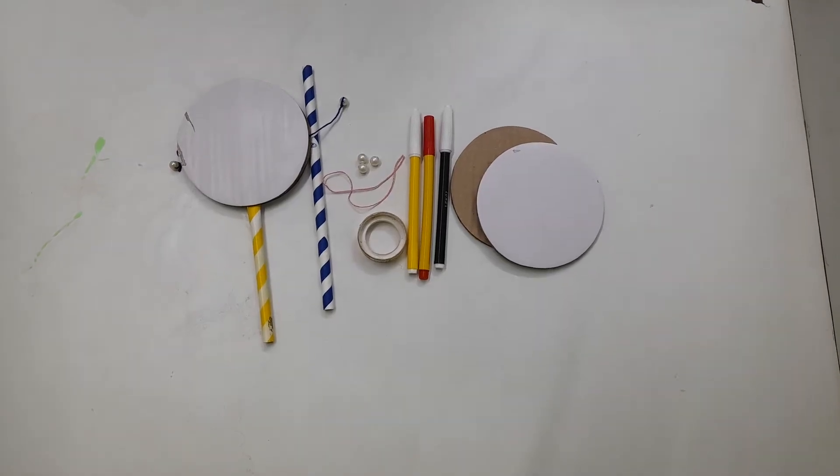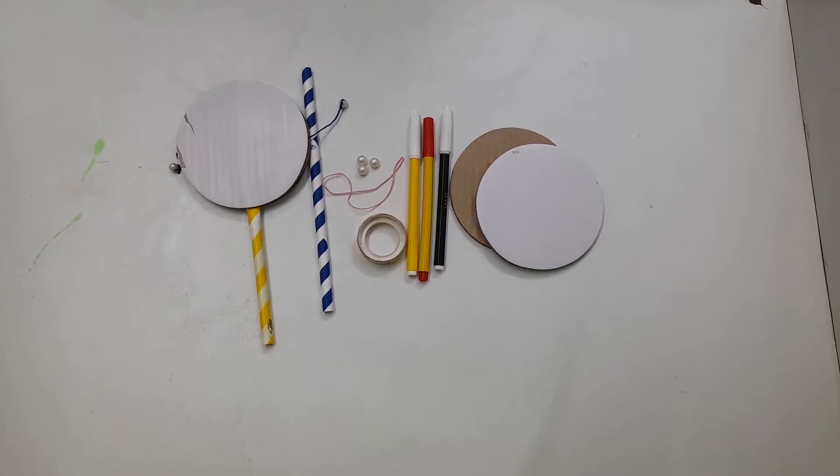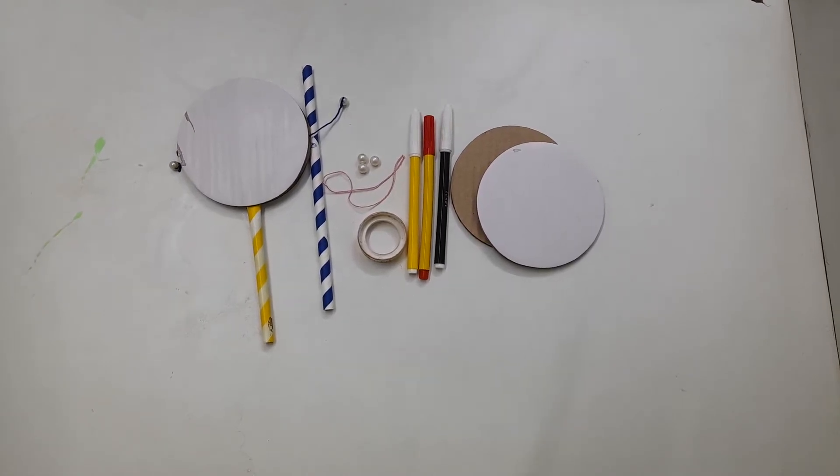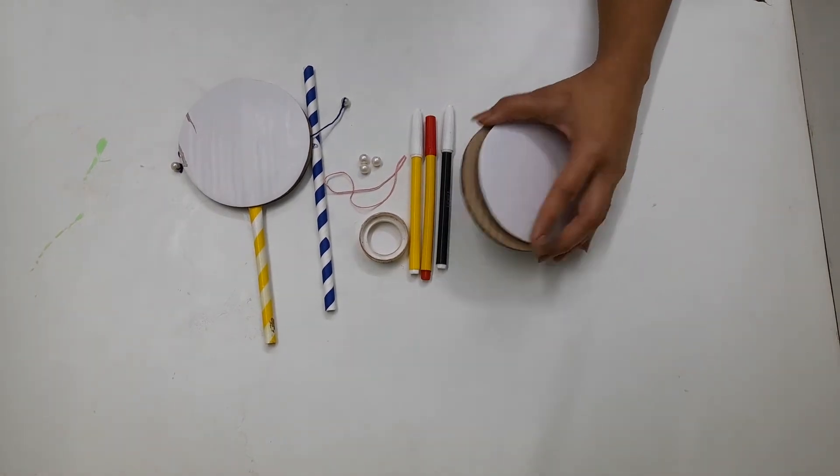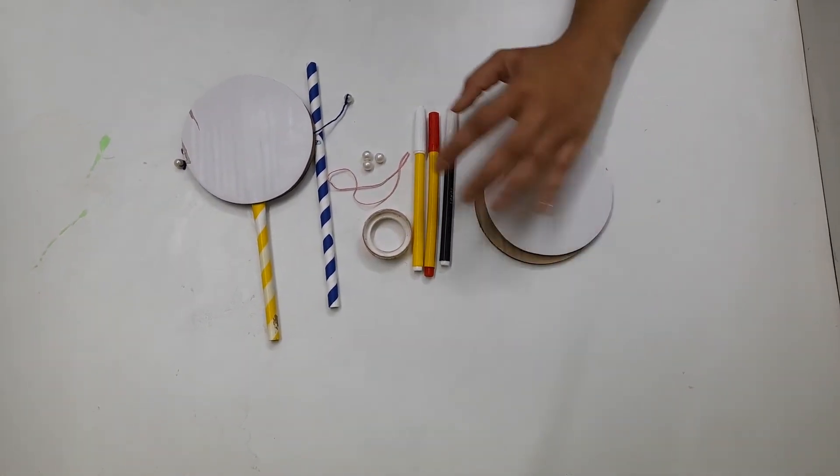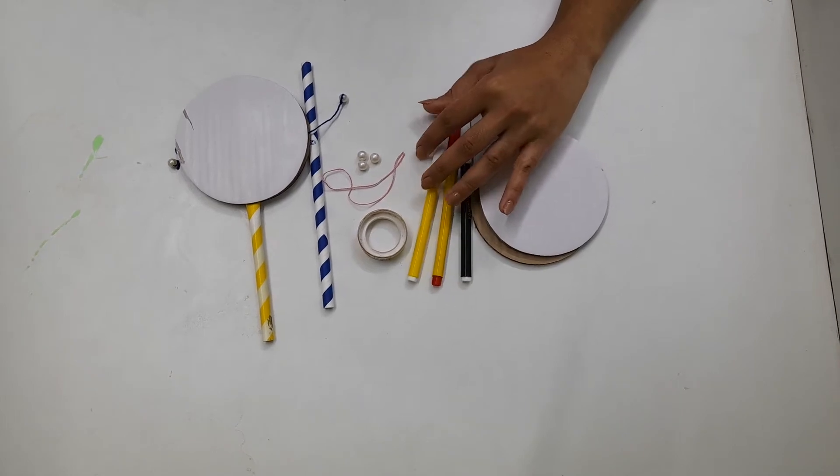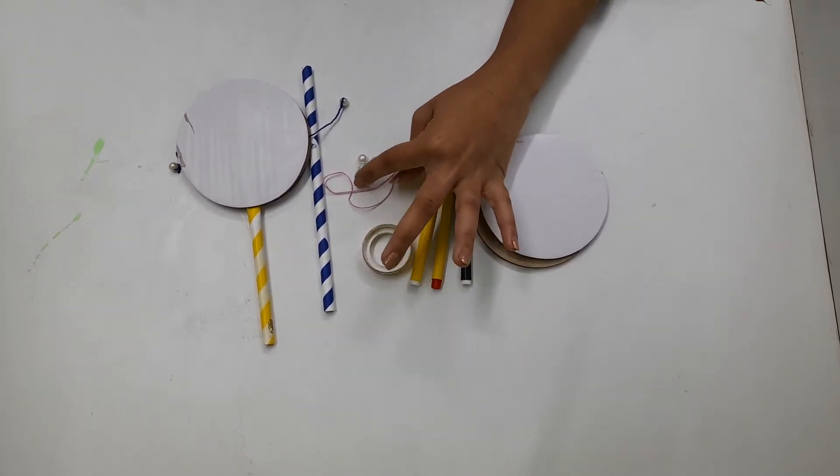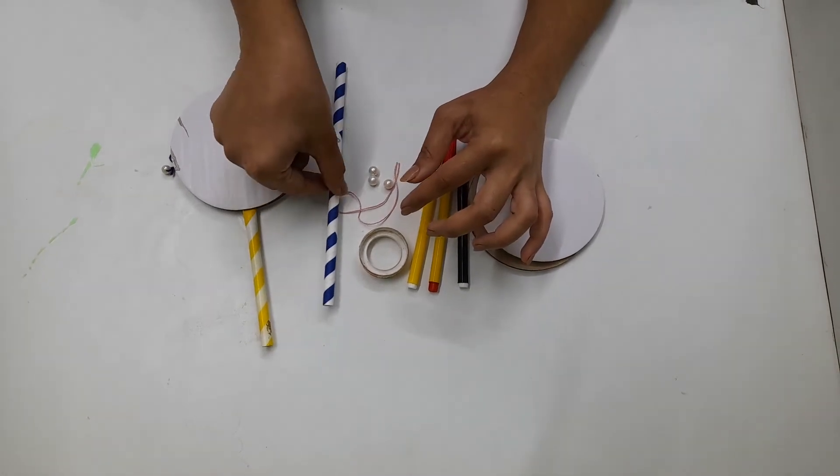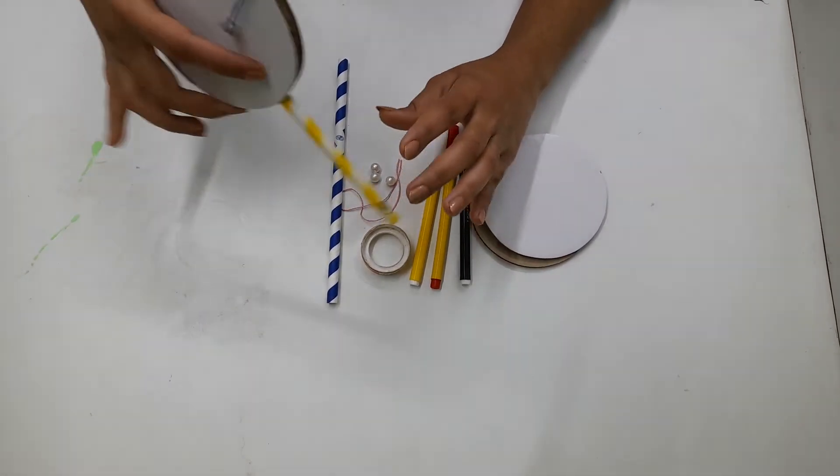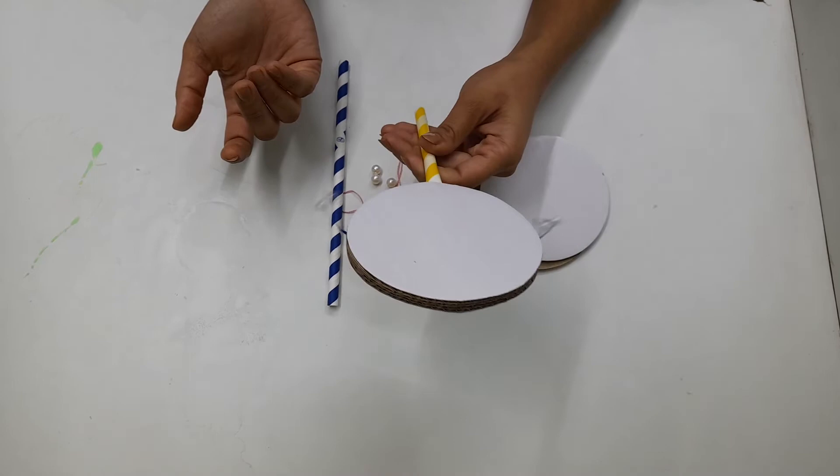Hello everyone, today I will perform an activity called pellet drum. For this you have two circular pieces of cardboard, then you have sketch pens, cello tape, thread, few beads, one thick straw, and a complete set of pellet drum.